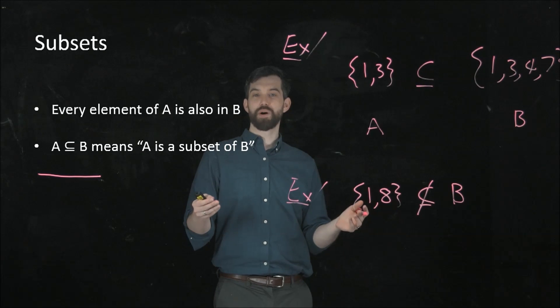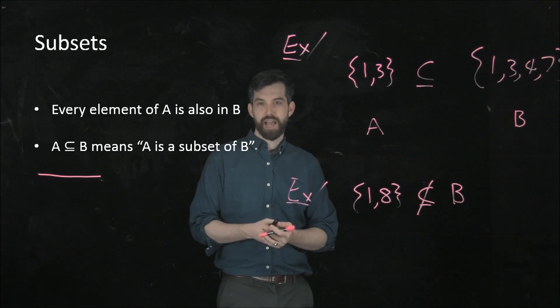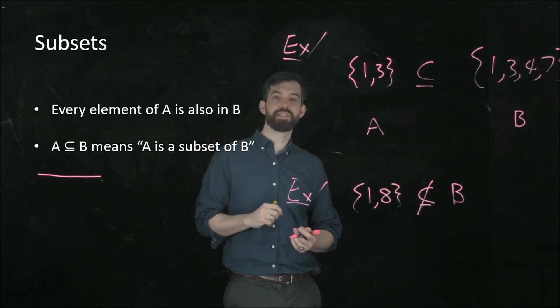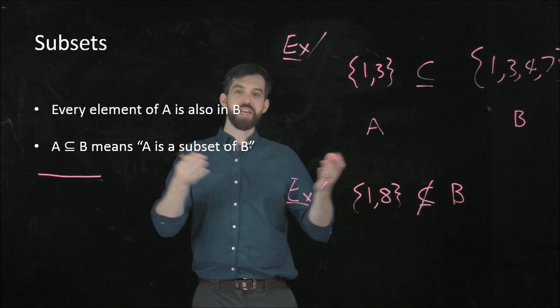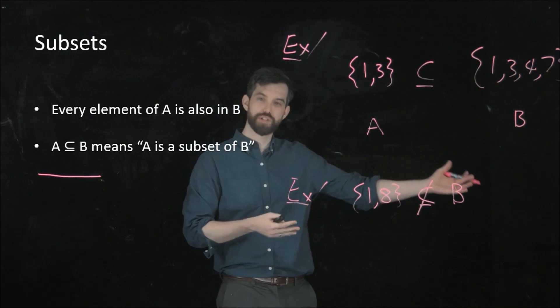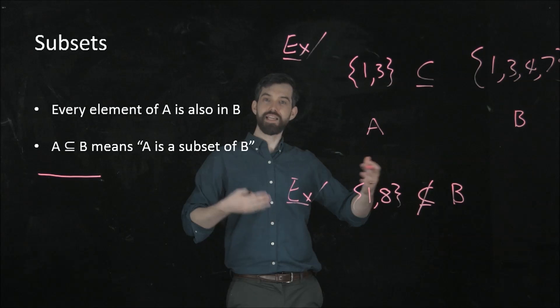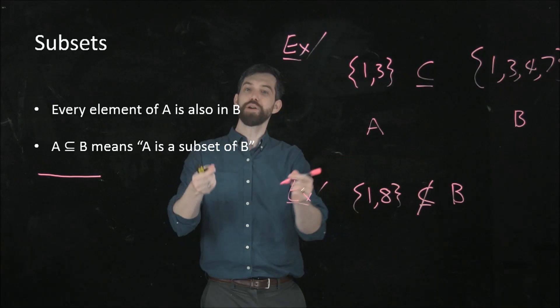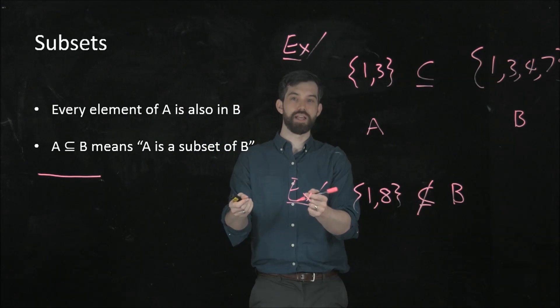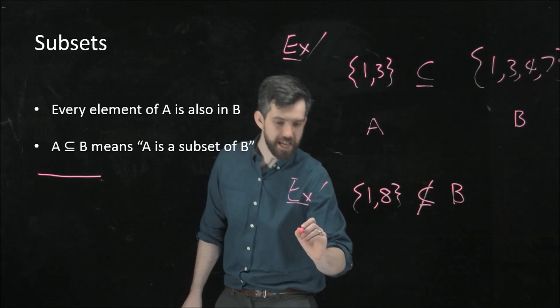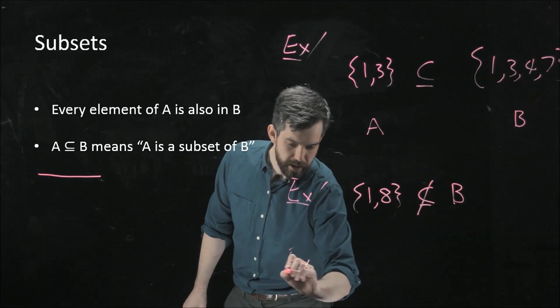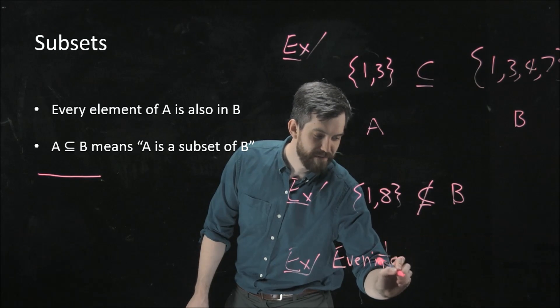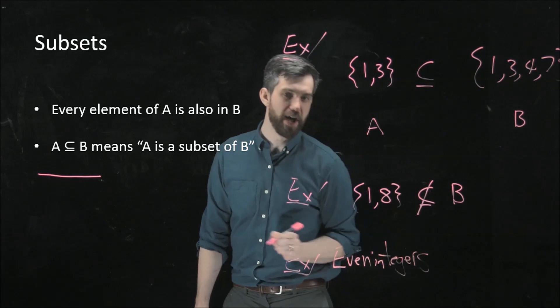One final example. We've seen before the integers, and the integers have all sorts of different subsets. One of the subsets that they have is the even integers. So if the integers are numbers 1, 2, 3, 4, and so on, and the even integers are 0, 2, 4, 6, so every even integer has the property of being an integer. So I can say that the even integers, I'm not going to get a fancy symbol for that, it's not quite common enough. Now, the even integers are going to be a subset of the integers.